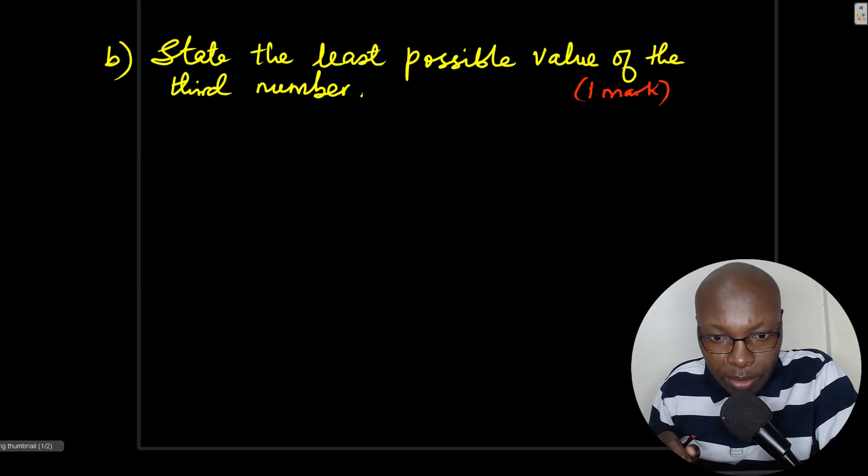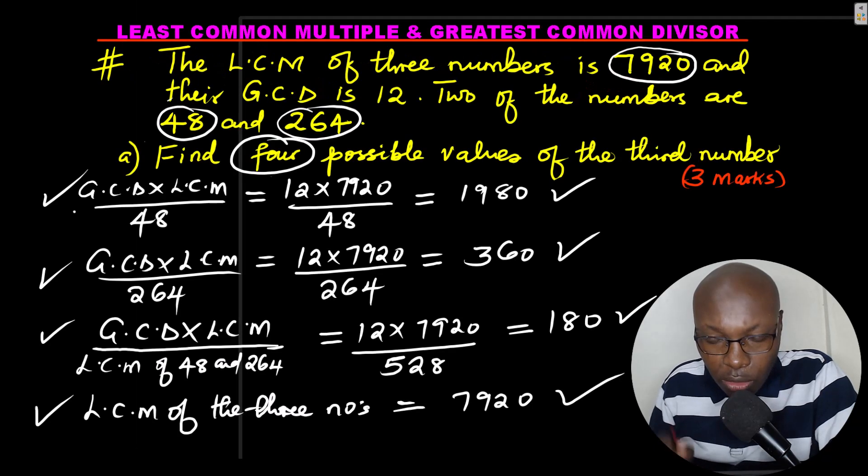We go to part B, which is very simple and straightforward. State the least possible value of the third number, the least possible value. So among these values that you've got, 1980, 360, 180, 7920. So which is the least, which is the smallest? And the smallest among these is 180.